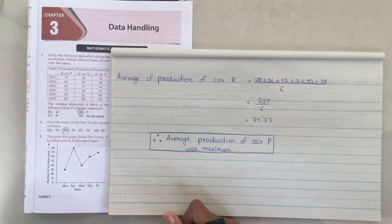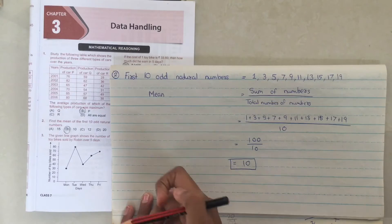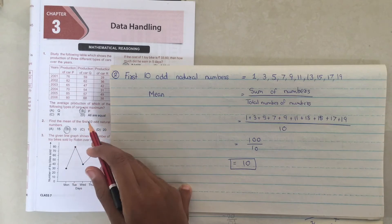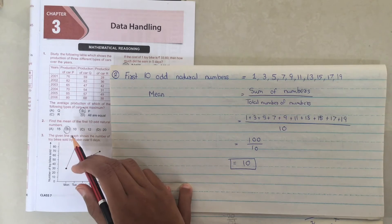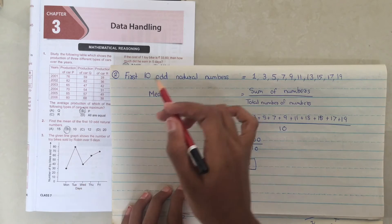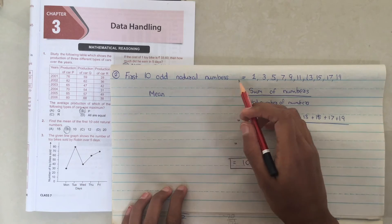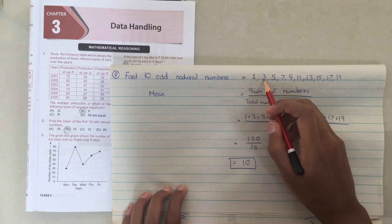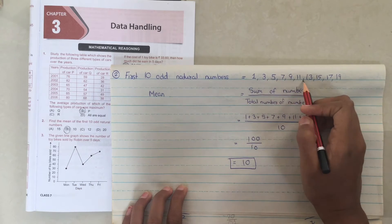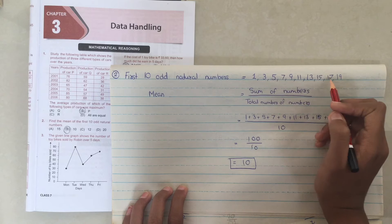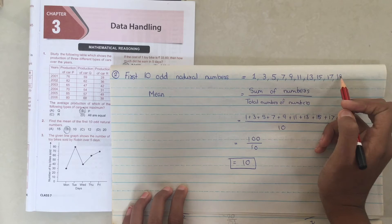Now let us move on to the next question. In question 2, we have to find the mean of the first 10 odd natural numbers. So the first 10 odd natural numbers are: 1, 3, 5, 7, 9, 11, 13, 15, 17, and 19.